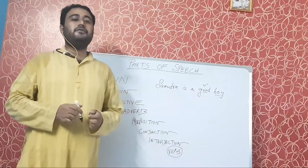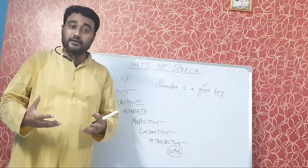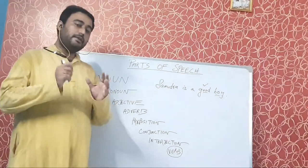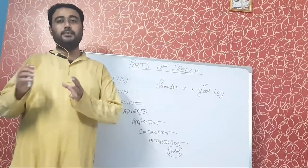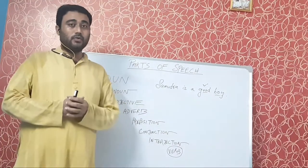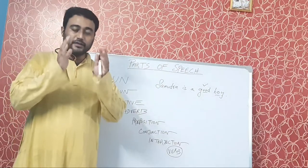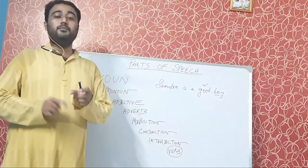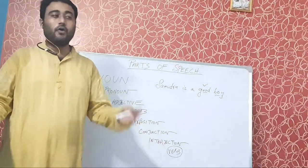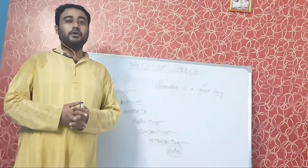Now, adverb. The most important function of adverb is that it describes the verb. In certain cases it also describes an adjective or an adverb itself, but most importantly, it describes a verb. Then, preposition. For example, the cat is under the table. The cat is the noun, and table is also the noun. So preposition is the word which shows the relation between a noun and another noun, between a noun and an adjective, or between a noun and any other thing. Examples of prepositions: on, in, at, by, and many more.